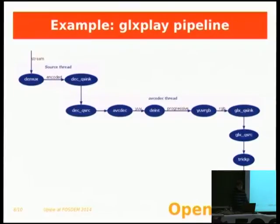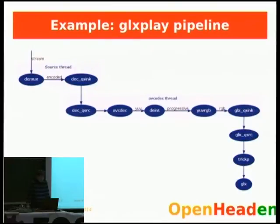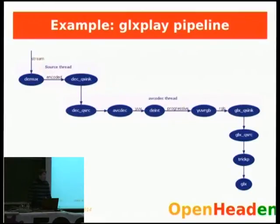I'd like to end the talk with a few examples. The first is the GLX Play example. It has three threads: the main thread running the GLX module, one source thread that reads data from the network or file, and one decoding thread that takes data from the source and decodes it for output. You can see the use of queues — one queue after the source thread and one queue after the AV Codec thread. You can design it the way you want. For instance, the PPAPI of Chrome requires all outputs in one thread — that's not a problem; you can have queues that bridge all buffers to one single thread and output from there.